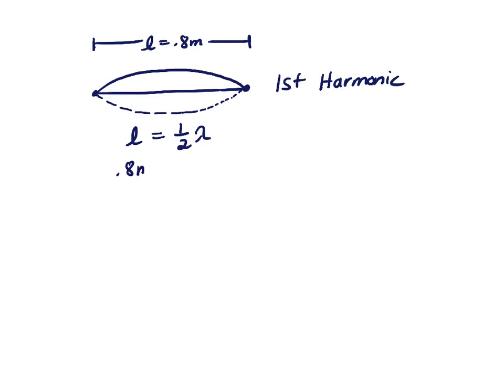Now, we can plug in 0.8 meters equals one-half lambda. And so, lambda is 2 times 0.8, which is 1.6 meters. So, for the first harmonic, the wavelength on this particular string is 1.6 meters.